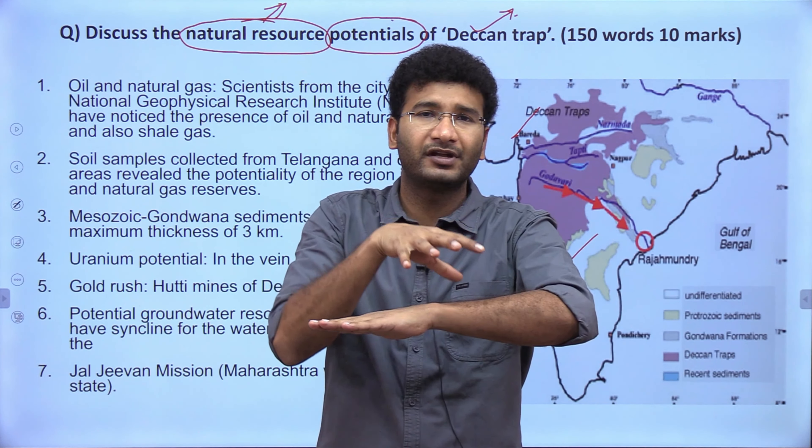Wherever valleys and rivers exist, there is also potential for wind energy. The natural resource potential also includes solar energy — throughout 365 days, the Deccan Trap has intense sunlight regardless of season. Gas reserves include shale gas, liquid petroleum gas, and crude oil. Mesozoic Gondwana sediments at a maximum thickness of about 3 km are also a potential rich source. Uranium potential also exists in the Deccan Trap area.